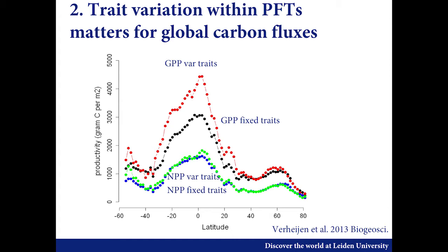As Rosie showed, as soon as you start tweaking parameters things do change, but not necessarily for the good — which also happens in this case. The GPP is strongly affected, but if you compare it to flux net data, it's probably overestimating things in this particular model run, which also suggests there were additional errors elsewhere in the model that had not been compensated for. It does however show that this variation in traits — where the global mean trait value for a given PFT is the same — but if you start to vary it over space and time, simply this variation because of non-linear relationships leads to approximately 25% change in global GPP.